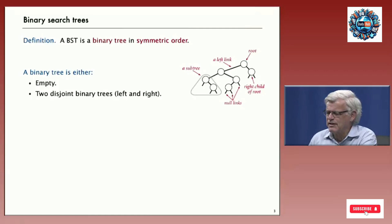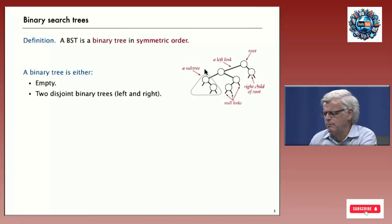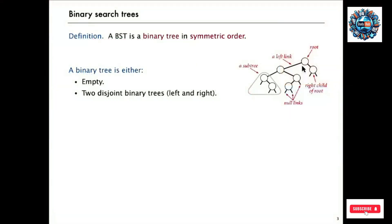A binary tree is an explicit data structure. It has what we call nodes, which contain information. Every node has two links — two binary trees that are disjoint from one another: a left tree and a right tree associated with each node. Links can be null — a left tree can be null, a right tree can be null, or both. We refer to every node in the tree as the root of a subtree, and we refer to the nodes below each node as its children.